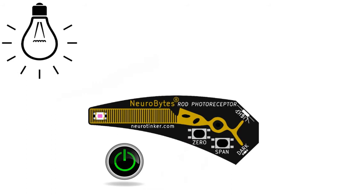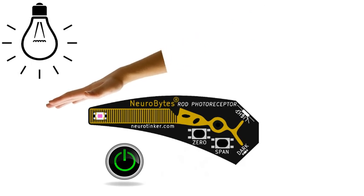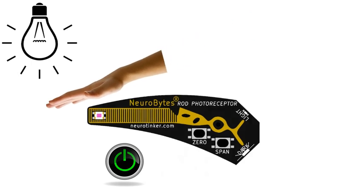After this adjustment for your ambient light, the light LED should be at full brightness if the sensor is not being blocked, and the dark LED is off. Move your hand over the sensor to create a shadow and watch how those LED patterns change. You should notice the light LED dimming and the dark LED growing brighter. These LED patterns are telling you about the output from the rod to a postsynaptic neuron, so let's connect one up now.